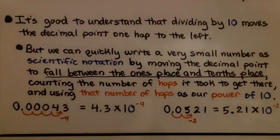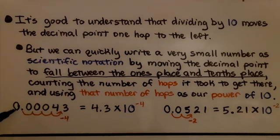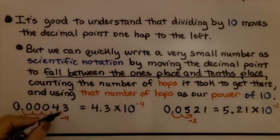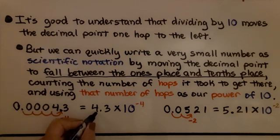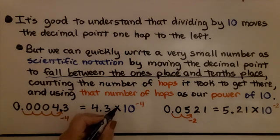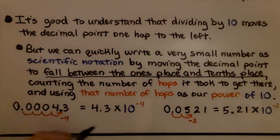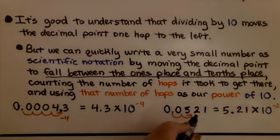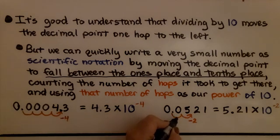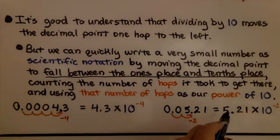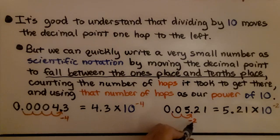It's good to understand that dividing by 10 moves the decimal point one hop to the left. We can quickly write a very small number in scientific notation by moving the decimal point to fall between the ones place and the tenths place, counting the number of hops, and using that number as our power of 10. For example, 0.00043 requires 4 hops to place the decimal between 4 and 3, giving 4.3 times 10 to the negative fourth power. For 0.0521, moving 2 hops gives 5.21 times 10 to the negative second power.